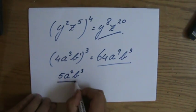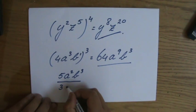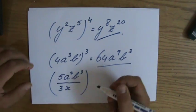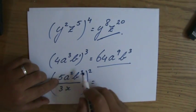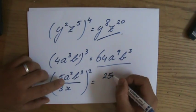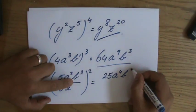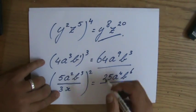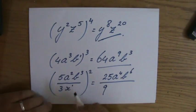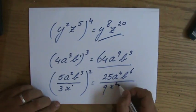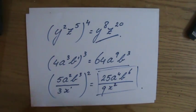Last example: 5a squared, b to the power 3, over 3x, all to the power 2. Step by step: 5 to the power 2 is 25; a to the power 2, to the power 2, is a to the power 4; b to the power 3, to the power 2, is b to the power 6; over 3 to the power 2, which is 9 — not 6, it's 3 times 3; and x to the power 1, to the power 2, is x to the power 2. There's no common factor to simplify, so the answer is 25a to the power 4, b to the power 6, over 9x squared. Excellent — example questions, next video, let's go.